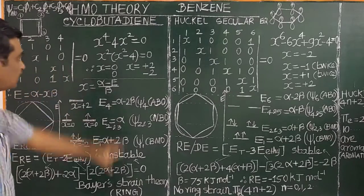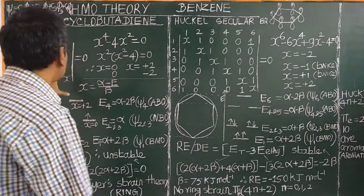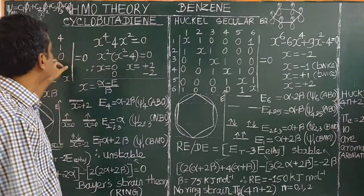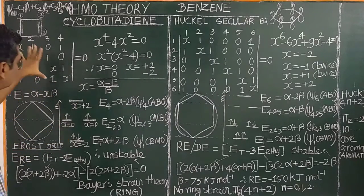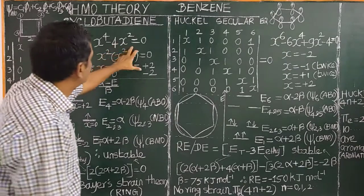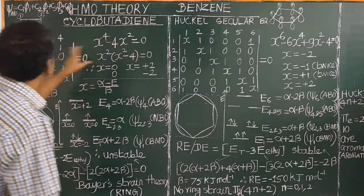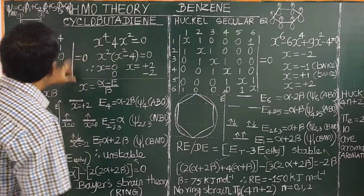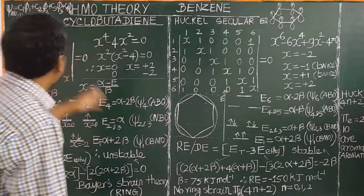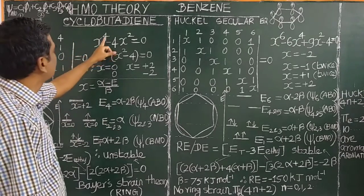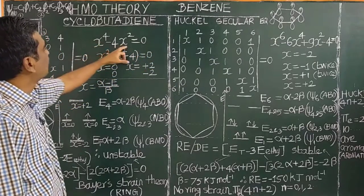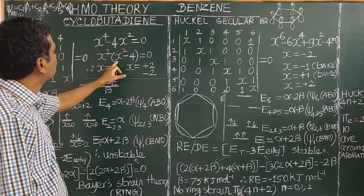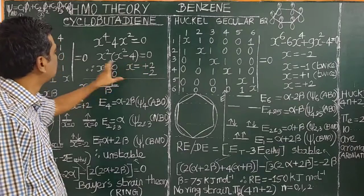On expansion of the secular determinant, as we have seen for 1,3-butadiene in the previous class, mathematically it can be written as x⁴ minus 4x² equals 0. Taking out x², we get x²(x² minus 4) equals 0.